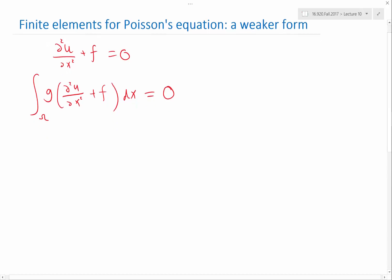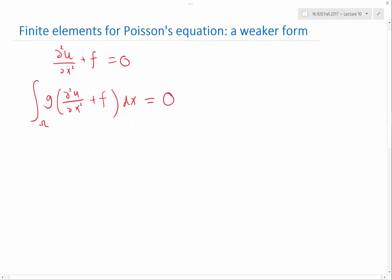And then we'll do something to weaken the requirement on the smoothness of the solution. So that procedure is called integration by parts. Integration by parts is simply saying that the integral of a derivative of any product function, let's say f times g, integrated over an entire domain, let's say a to b, the simplest case in 1D,